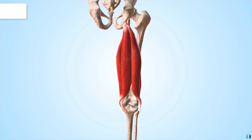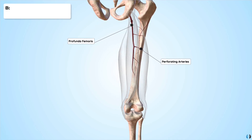The blood supply for these muscles comes from the perforating arteries of the profunda femoris. The profunda femoris is also referred to as the deep femoral artery, and we can see it running down the medial side of the femur before the perforating arteries split off to provide blood to the hamstring muscles.